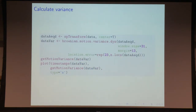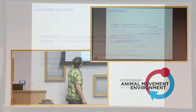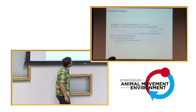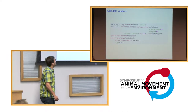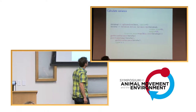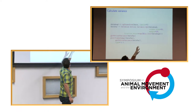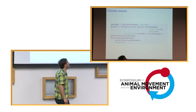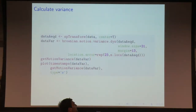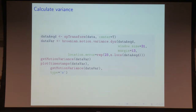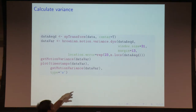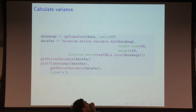We start by calculating the variance using the brownian motion variance dynamic function. You need four arguments: first the movement dataset — in this case the aeqd-projected data — then you specify the window width, the margin width, and a location error per observation. In this case I repeat the value 23, which is the standard deviation of the location error, repeated for the number of locations of the animal. The units are the standard deviation of a normal distribution, as the errors are assumed to be normally distributed.